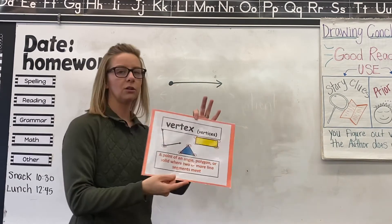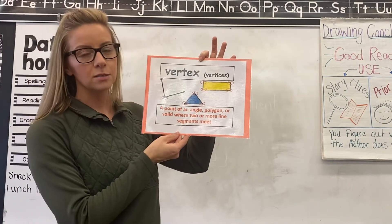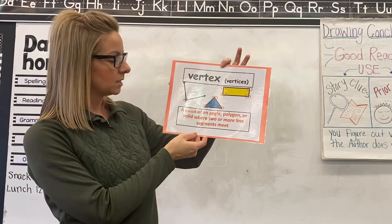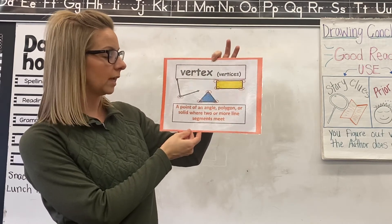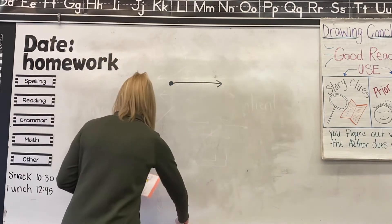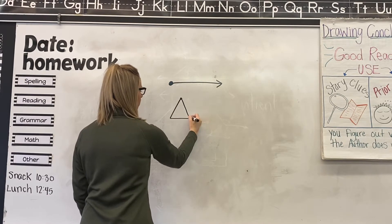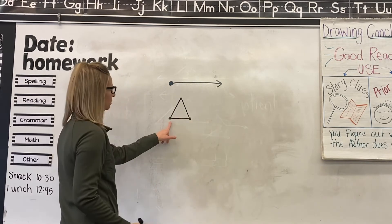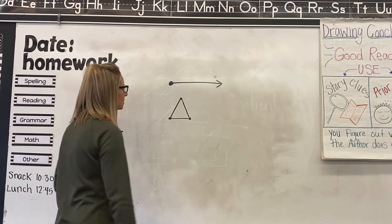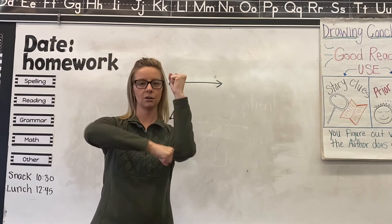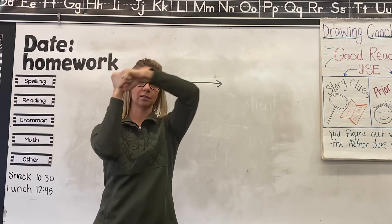The next word is called vertex. That is one, but vertices is more than one vertex. A vertex is a point of an angle, polygon, or solid where two or more line segments meet. So if I were to draw a triangle, the points where the sides meet would be the vertices or one of them would be a vertex. The motion for this is going to be just here, here, here, and here, kind of making like a rectangle. Vertex, vertex, vertex, vertex.